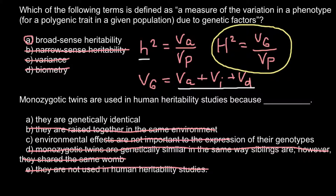So we can study how the environment influences different traits, especially when two monozygotic twins are raised in different environments. This is how we can say, for example, that a certain trait is 90% due to genetics and 10% due to environmental influence, or vice versa. This is our answer for the second question — answer A: they are genetically identical.